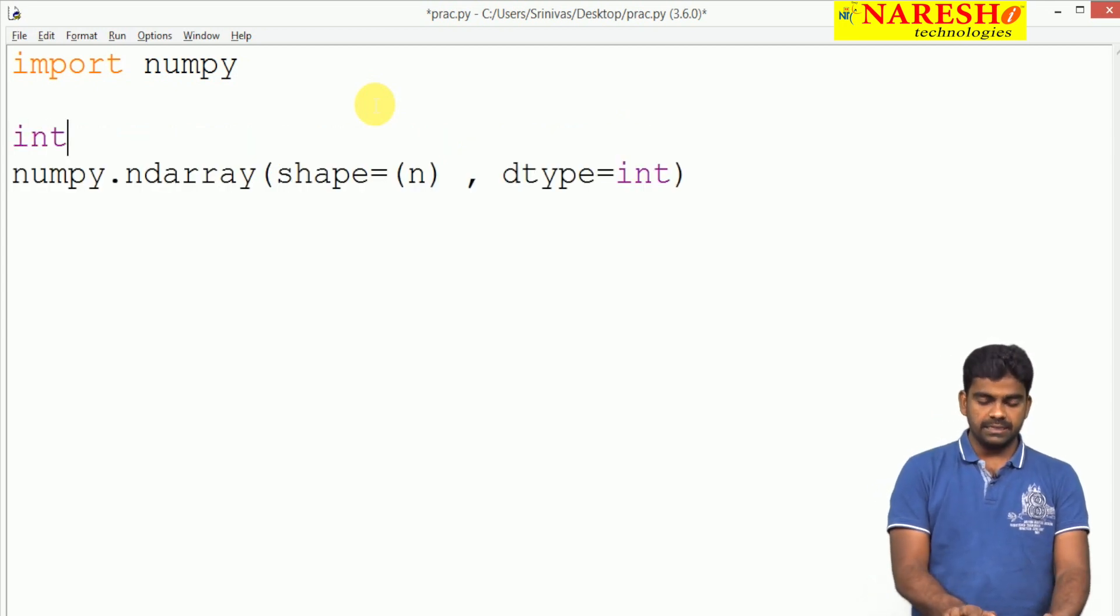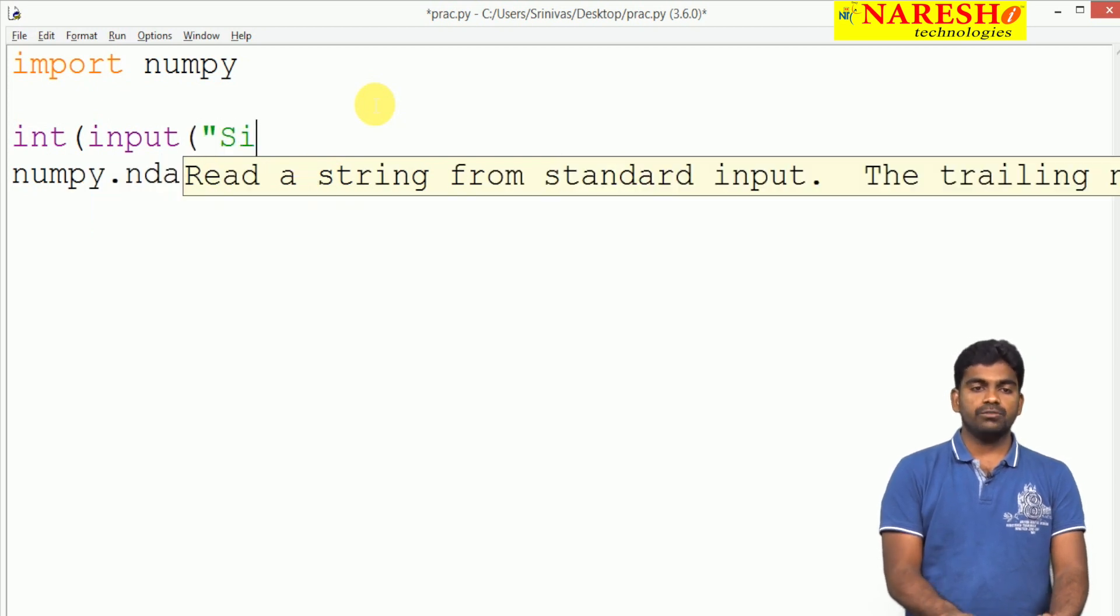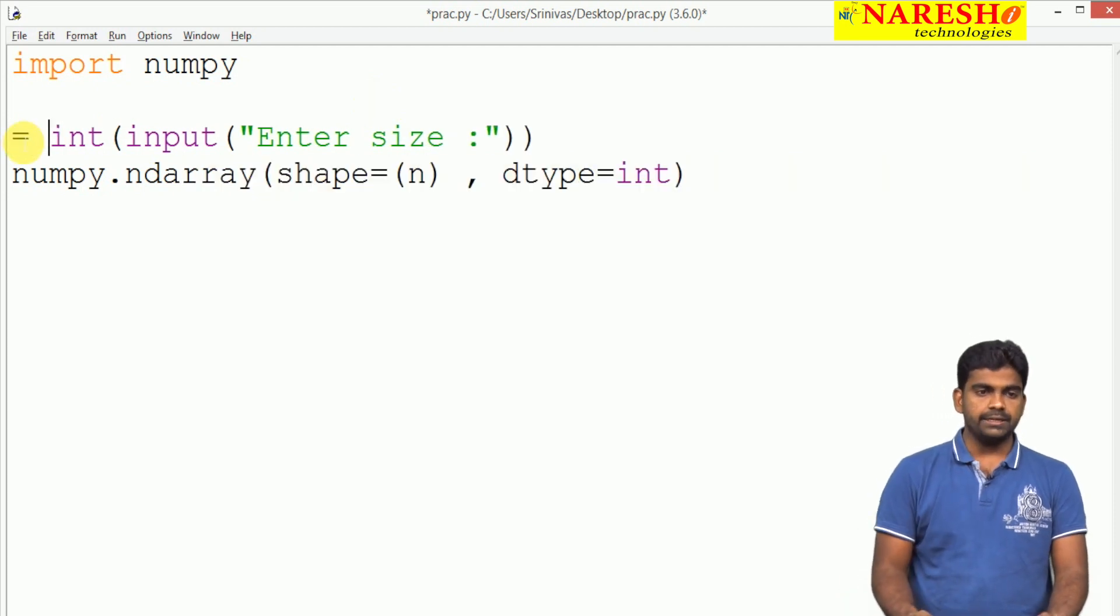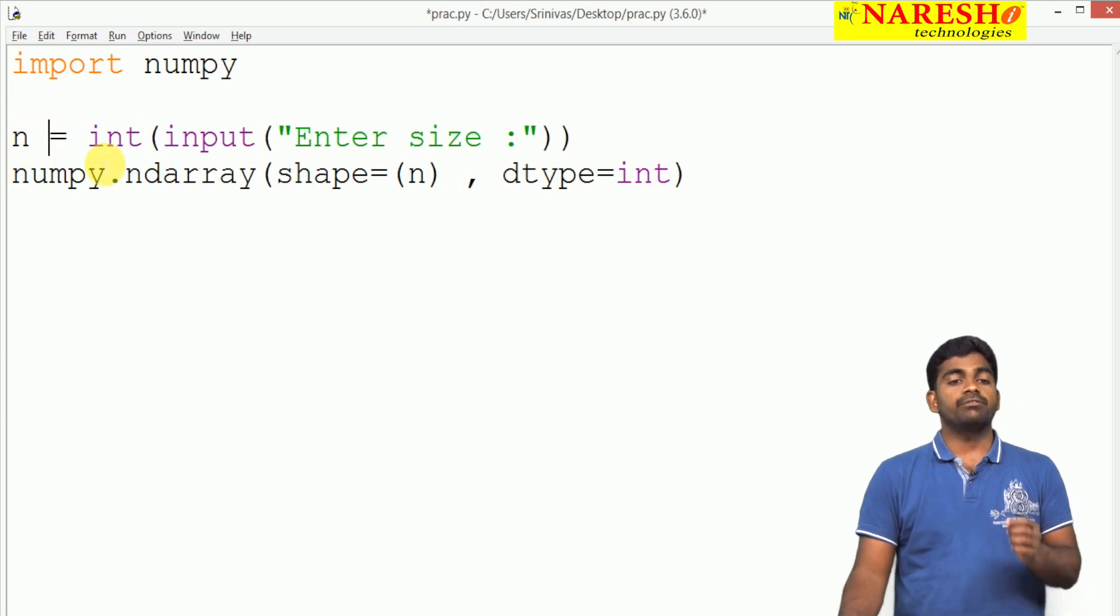We use integer of input to ask 'enter size', and collect that into n. We mention the variable here in the shape to construct the array using ndarray.